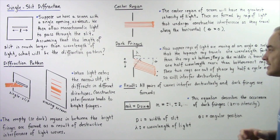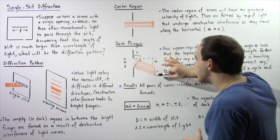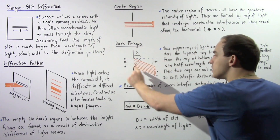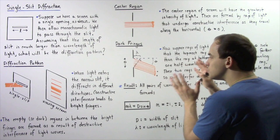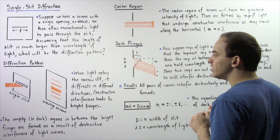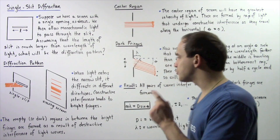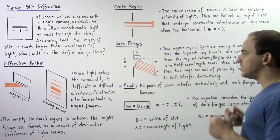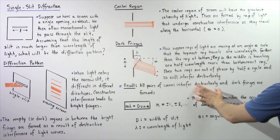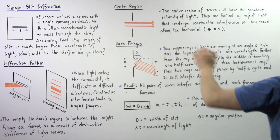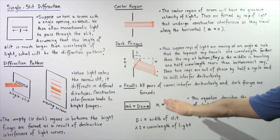In the same exact way, if we examine the ray one above the bottommost ray and one above the middle ray, those rays will also interfere destructively and they too will disappear. In fact, all pairs of waves interfere destructively as shown in this diagram, and dark fringes are formed.